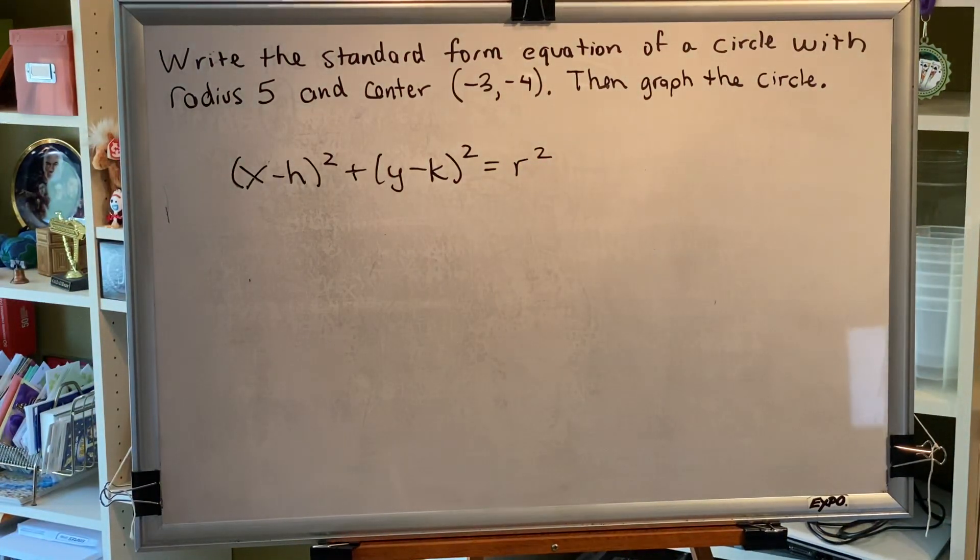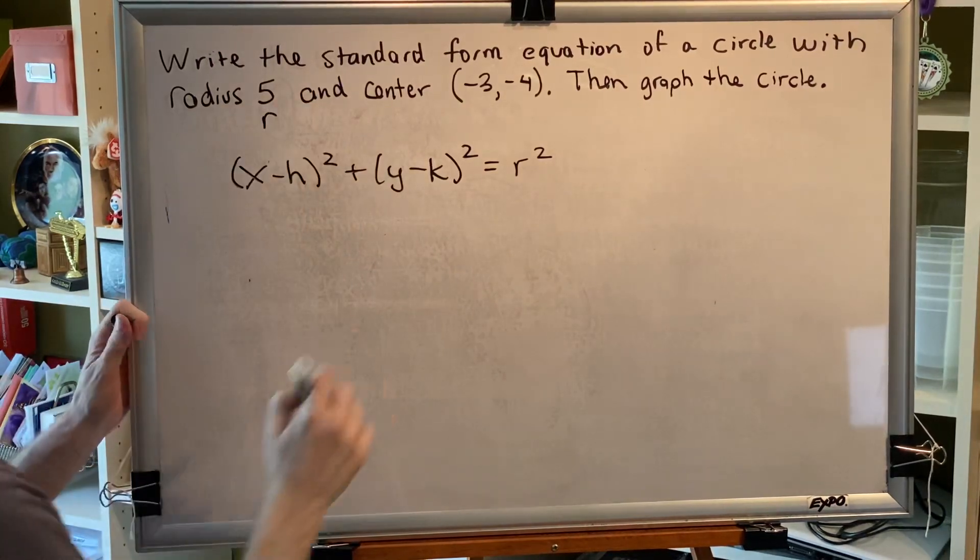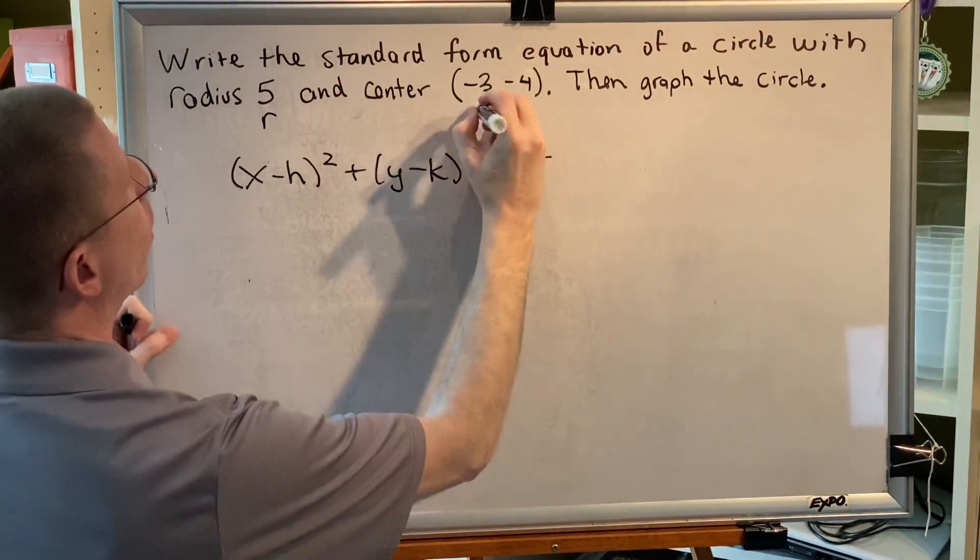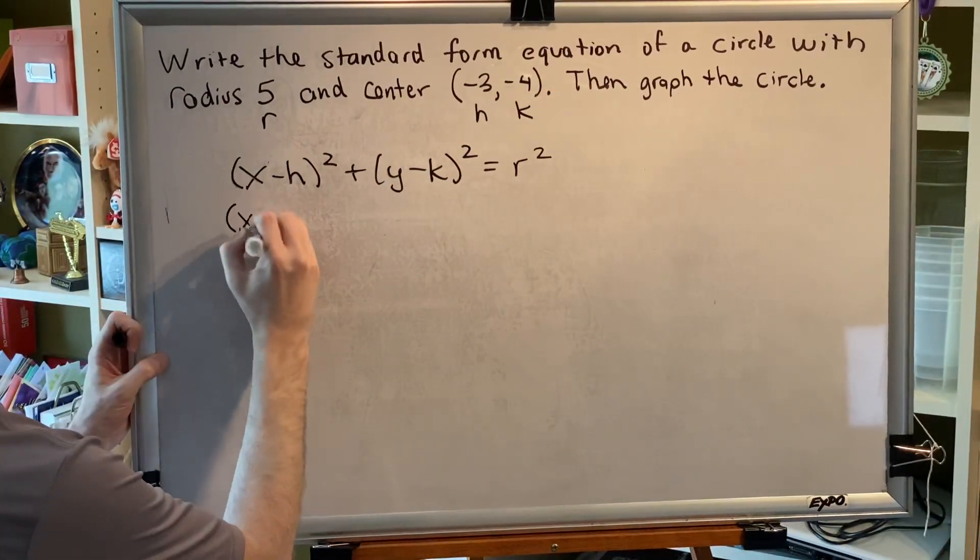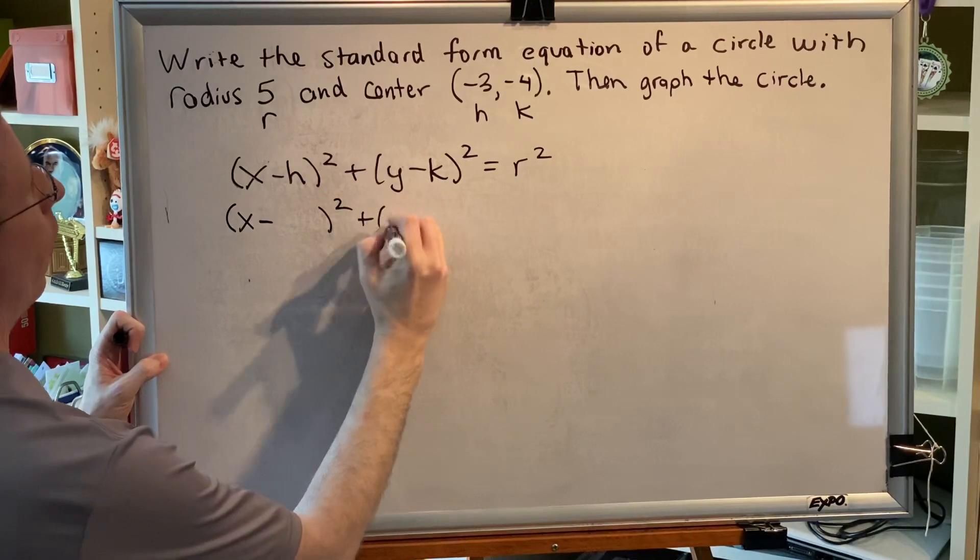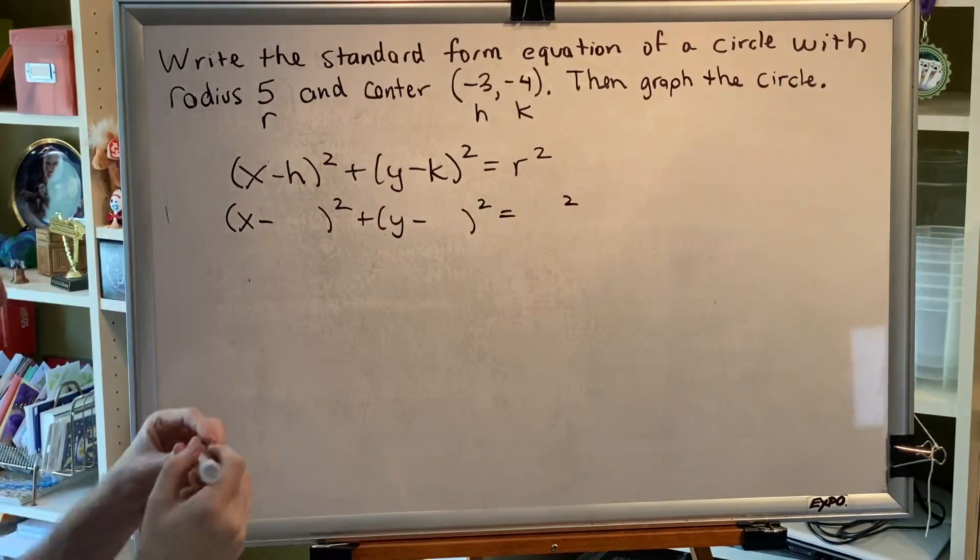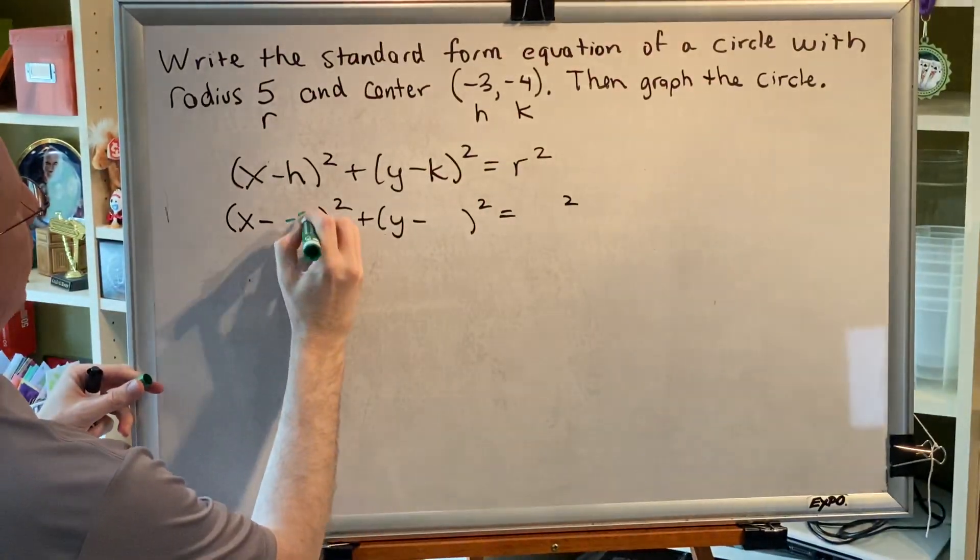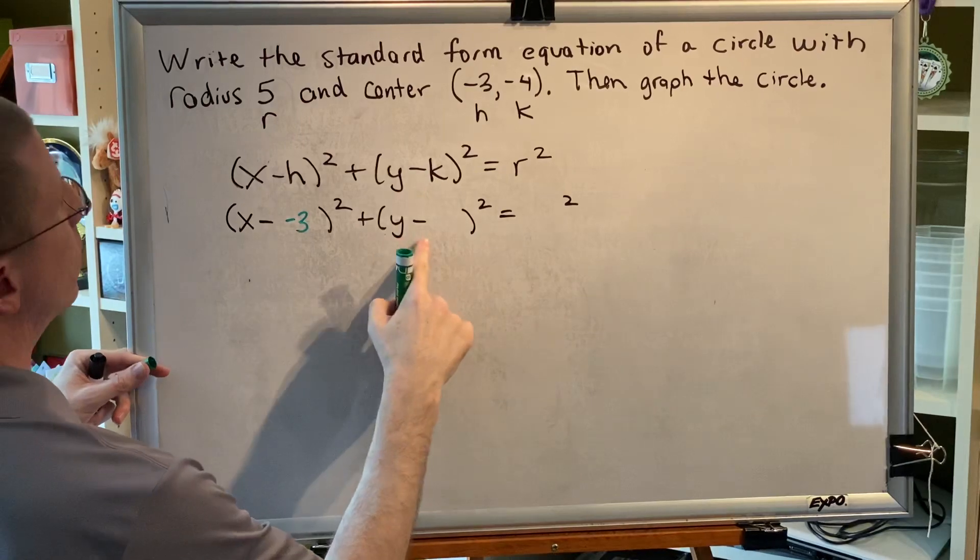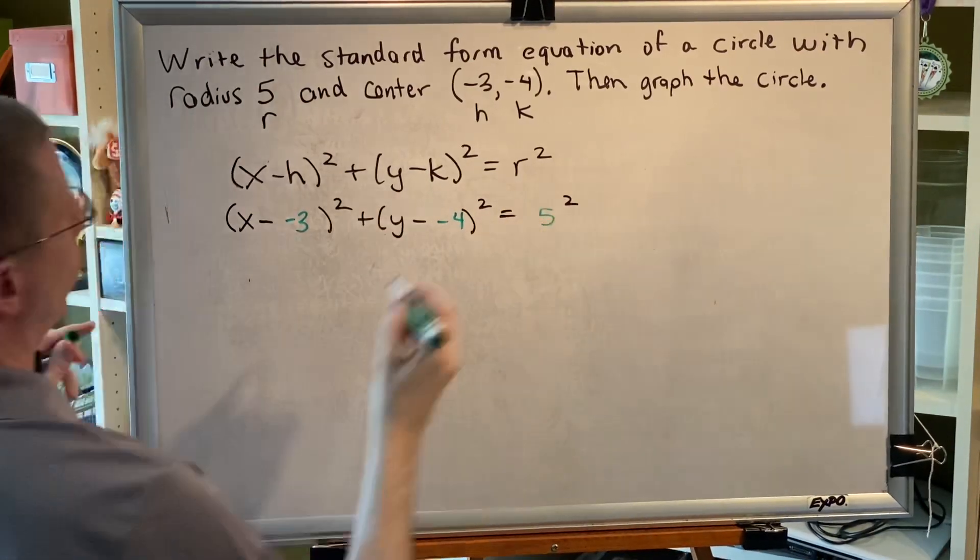We know that in this problem, the radius is five. So that's r. And the center is (-3, -4). So that's h and k. So if we replace those variables in our equation with their respective values, we would get (x - (-3))² + (y - (-4))² = 5².